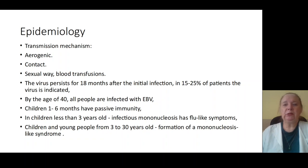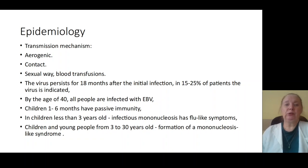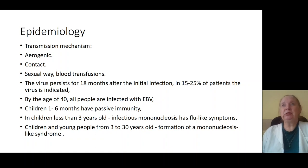A flu-like form may appear in patients less than 3 years old. The clinical picture of infectious mononucleosis appears in patients older than 3 years. Infants from 1 to 6 months have passive immune response — maternal antibodies from their mothers' organisms.